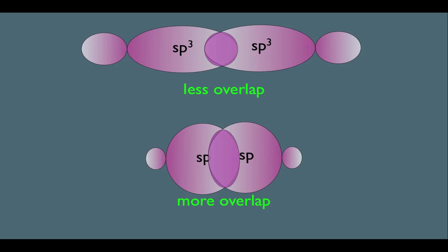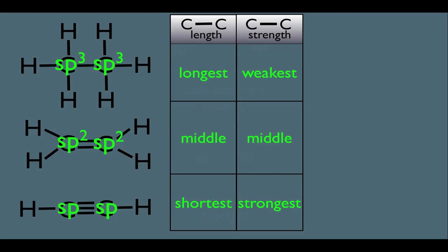And remember, the more overlap you have of orbitals, the stronger the bond, and therefore the less overlap would give you a weaker bond. So again, hybridization makes sense of the bond strengths here.